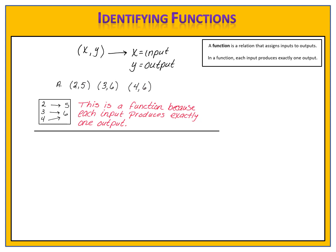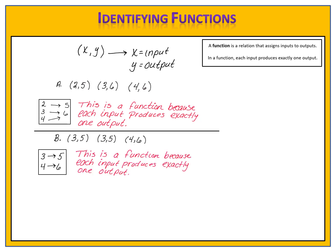Let's look at a second set of ordered pairs. Here we have the points (3,5), (3,5), and (4,6). Think about what this would look like as a mapping diagram. We have the input 3 producing the output 5, the input 3 producing the output 5 again, and the input 4 producing the output 6. Does each input produce only one output? Yes, they do. Therefore, this relation is a function, because each input produces exactly one output.